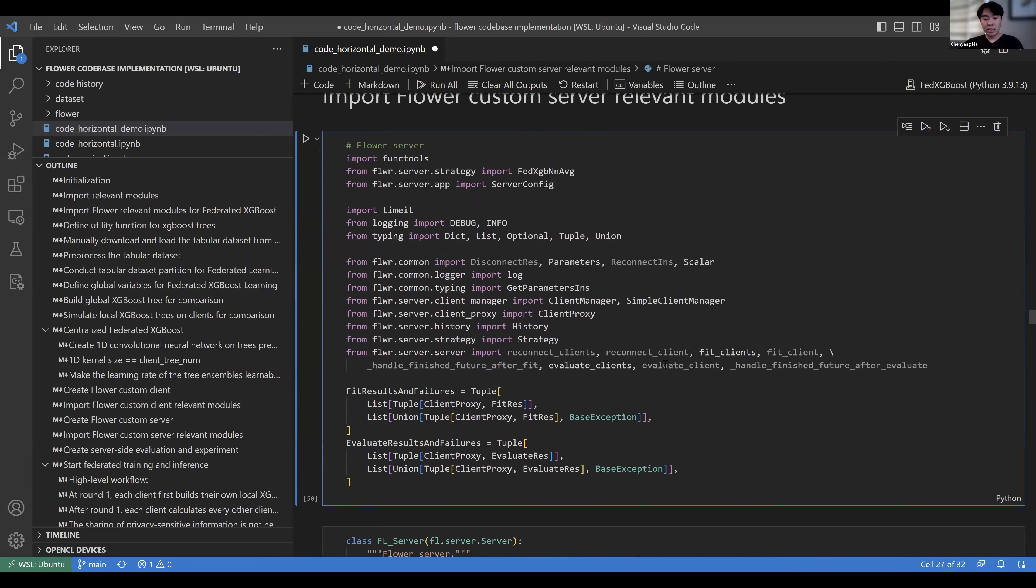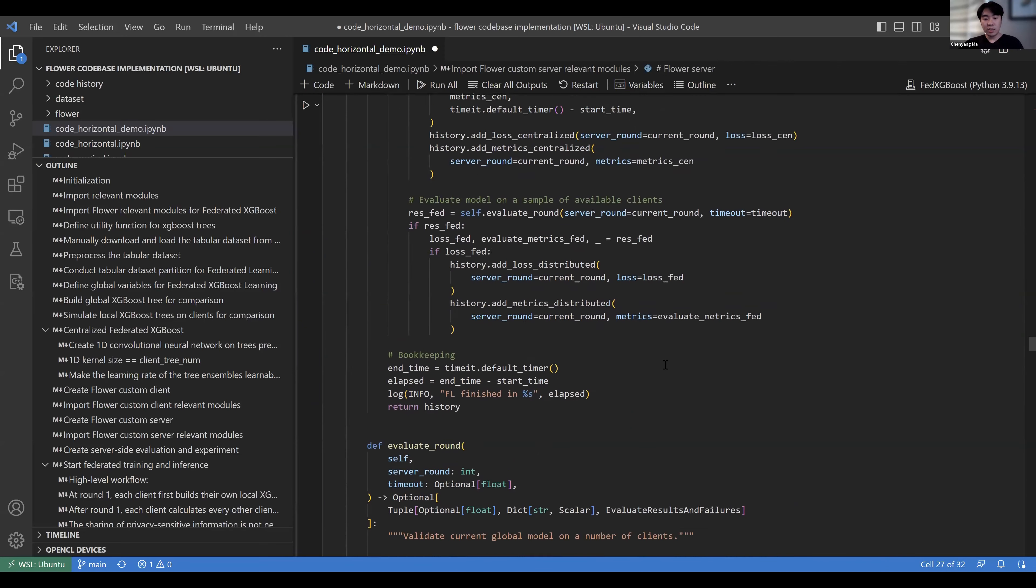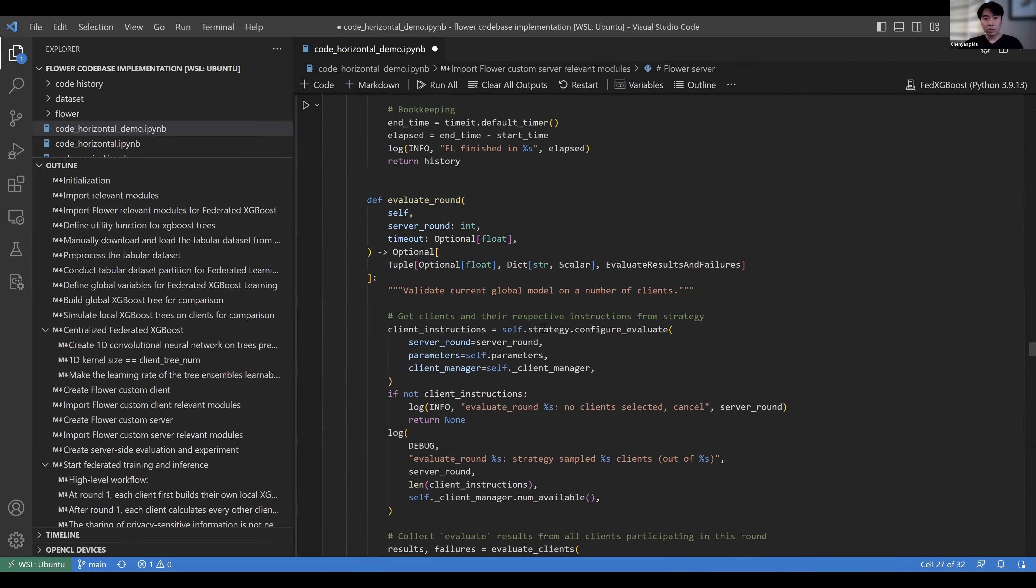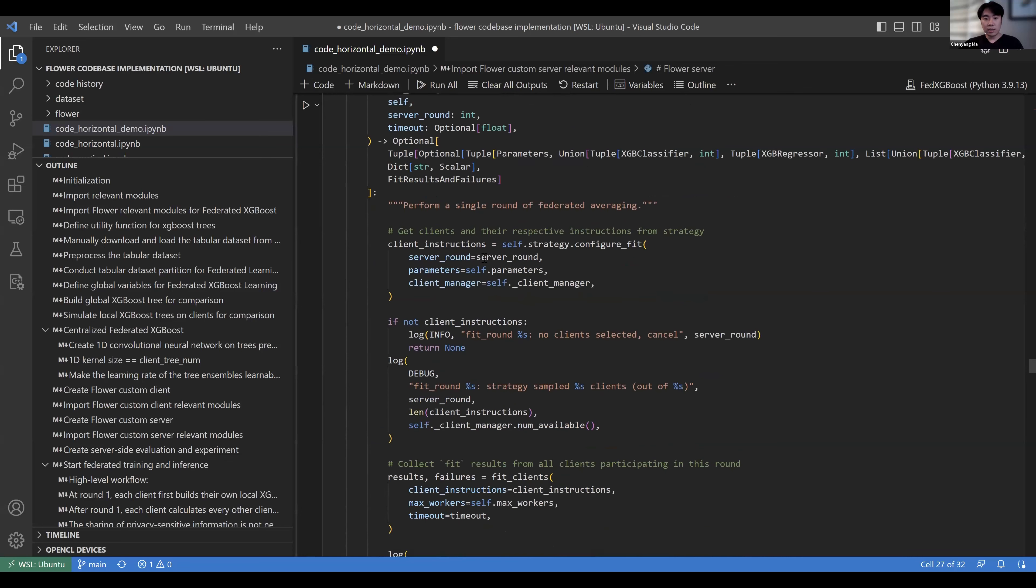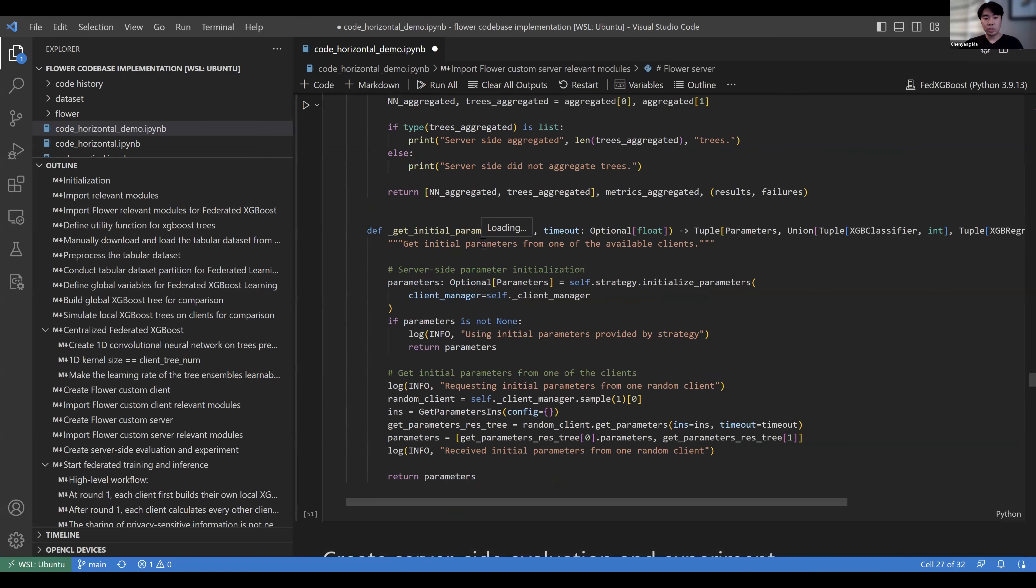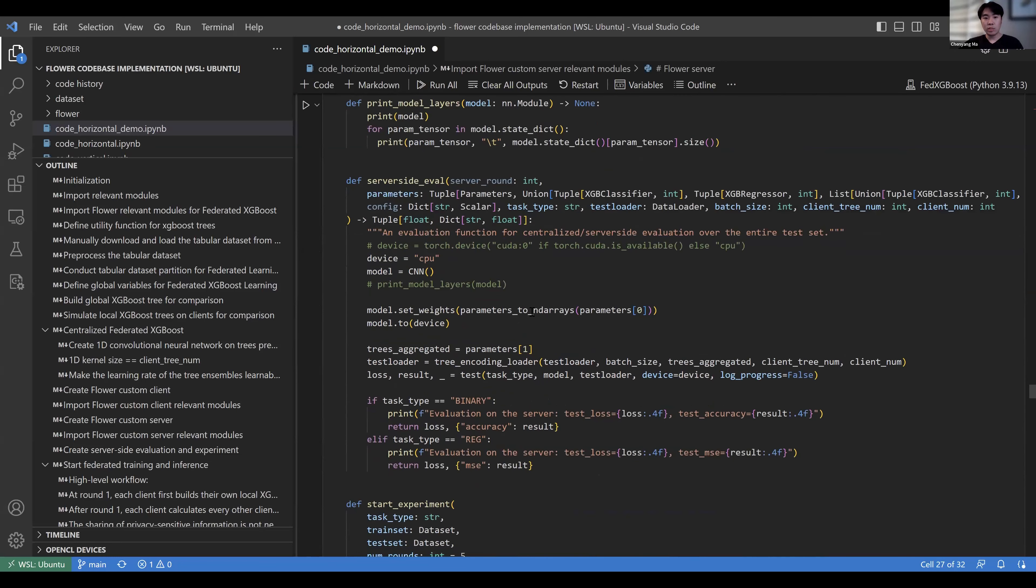After this, we define our customized Flower server. In this section, we mainly make revisions to the function called aggregate_fit and get_initial_parameters because we need to share the tree ensembles. Others all follow the default code of the Flower framework. Finally, we define our customized server-side evaluation function to do evaluation.